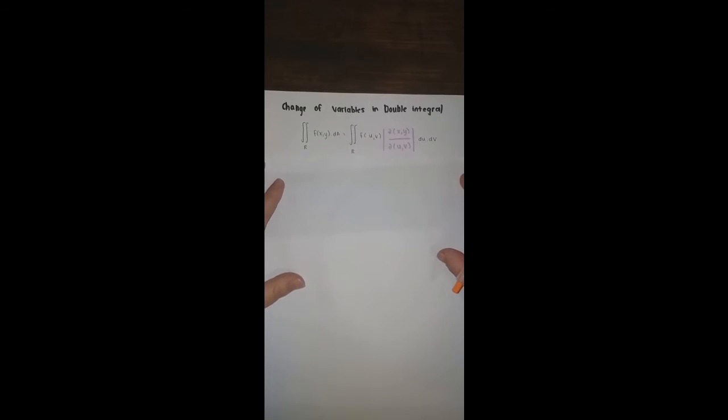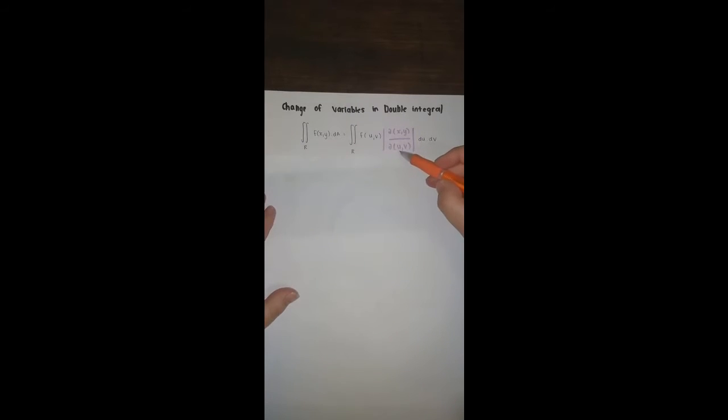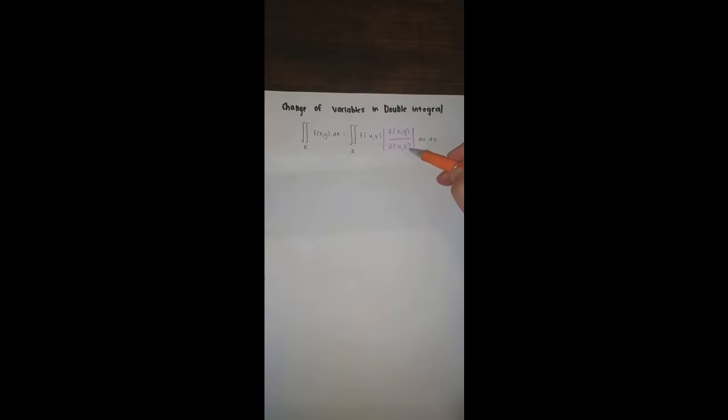Changing variables in double integrals looks like this: it's the absolute value of the partial derivatives of x and y over the partial derivatives of some new variables. This isn't specifically r or theta — it can be any variables you want.